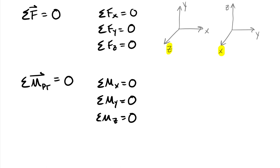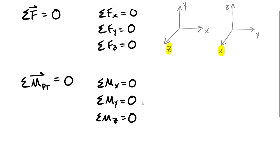When talking about summing moments about axes with these three equations, it's fundamentally saying the same thing as summing your moment about the origin and then isolating the x component, the y component, and the z component. If you took your sum of moments of all forces and couples around your origin and then dotted those onto the x-axis, the y-axis, and the z-axis, you'd end up with these exact same equations. We can also sum moments about some other point if we'd like to.